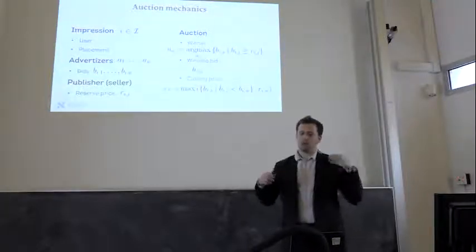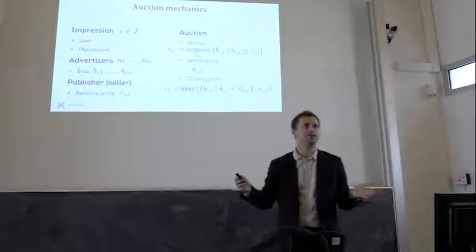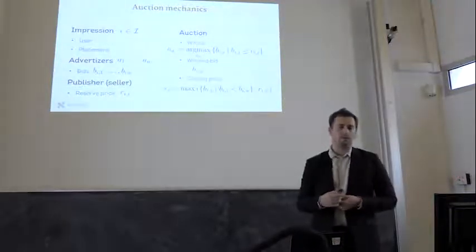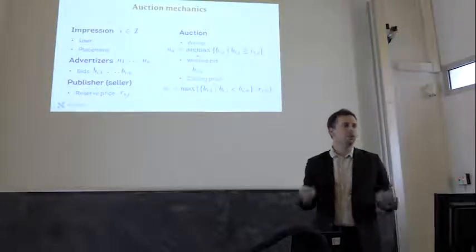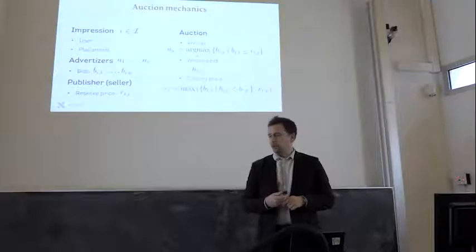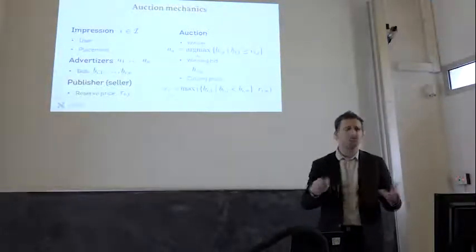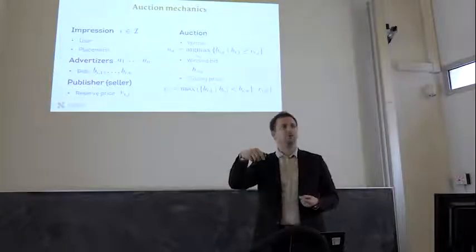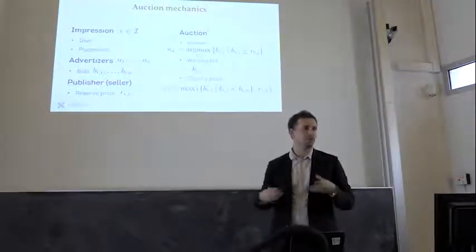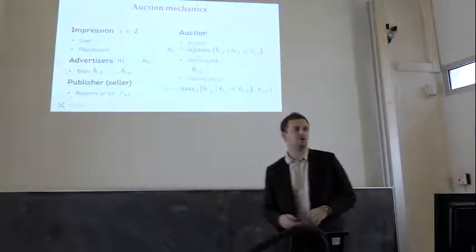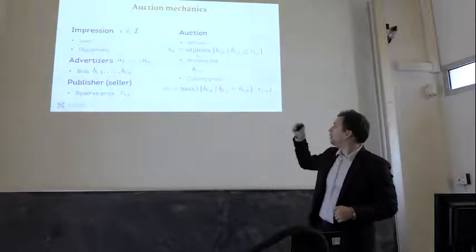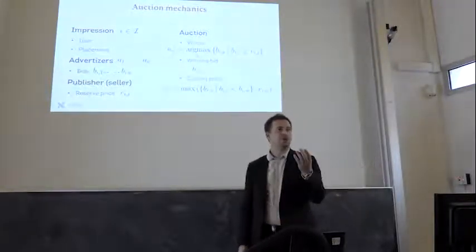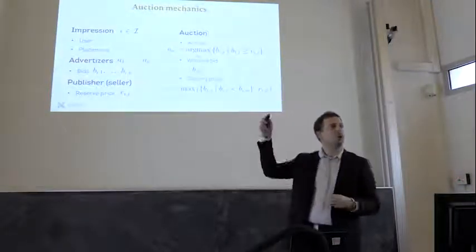To give you some order of magnitude of the amount of data we are dealing with: on a large French client, or a medium-sized US client, like a big news website, you have more or less in the order of magnitude of 10,000 impressions each second. Each impression yields a report with the price of the auction. You have a lot of information about this auction, the identity of the user. We deal with very large amounts of data. An impression is a user visiting a web page and seeing one particular placement on the web page, for example, the top of the page.